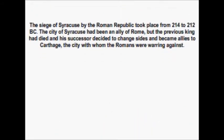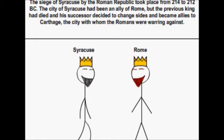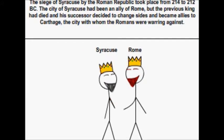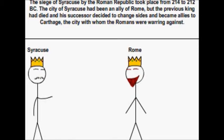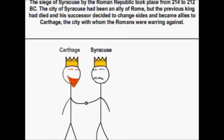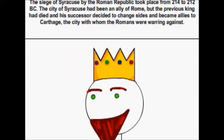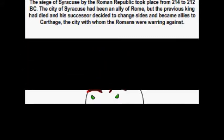The Siege of Syracuse by the Roman Republic took place from 214 to 212 BC. The city of Syracuse had been an ally of Rome, but the previous king had died, and his successor decided to change sides and become allies to Carthage, the city with whom the Romans were warring against.